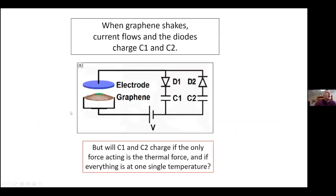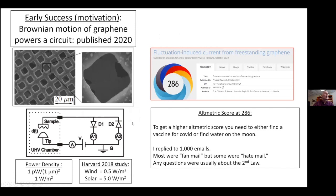That's what I call the deterministic part. Now the question: when graphene shakes, current flows and the diodes charge C1 and C2 — hopefully I've convinced you of that. But here's the key question: will C1 and C2 charge if the only force acting is the thermal force and if everything's at the same temperature?